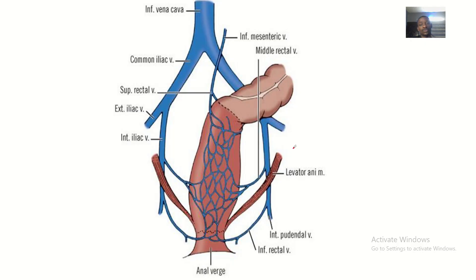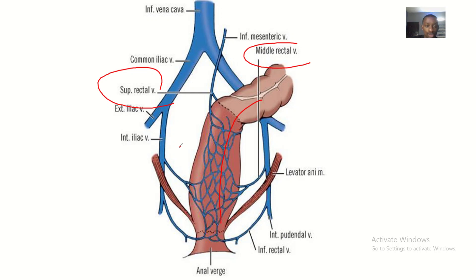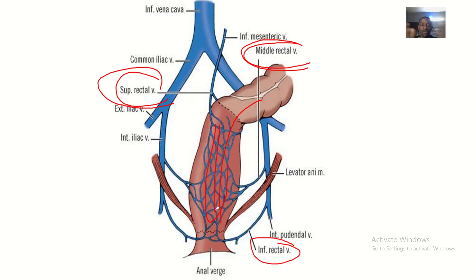To summarize using this image: this is the rectum shown in brown. You can see the superior rectal vein giving tributaries, the middle rectal veins giving tributaries, and the inferior rectal veins giving tributaries. These tributaries anastomose — they communicate at the posterior wall, anterior wall, and other sites — and they help drain deoxygenated blood from the rectum. That is the venous drainage of the rectum.